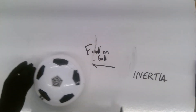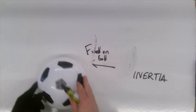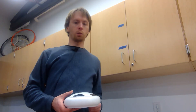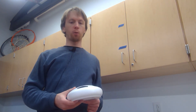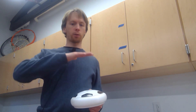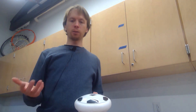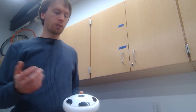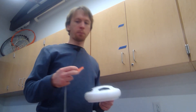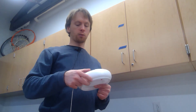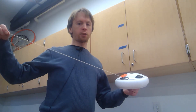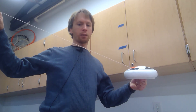We've seen what happens when we apply just one single force to the hover ball and how it glides along the surface. Let's look and see what happens to the motion of the hover ball when we apply a constant force. To do that, I'm going to tape a piece of string to the hover ball. To show that I'm pulling at a constant force, this string needs to remain taut like this.